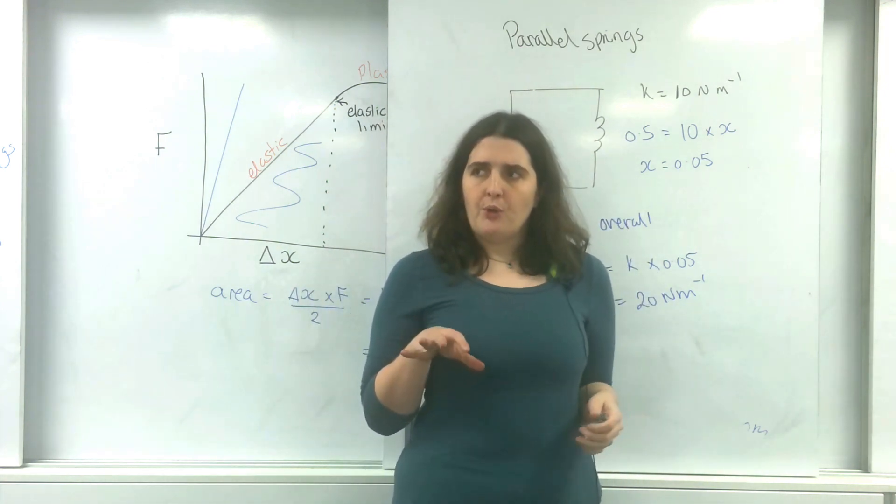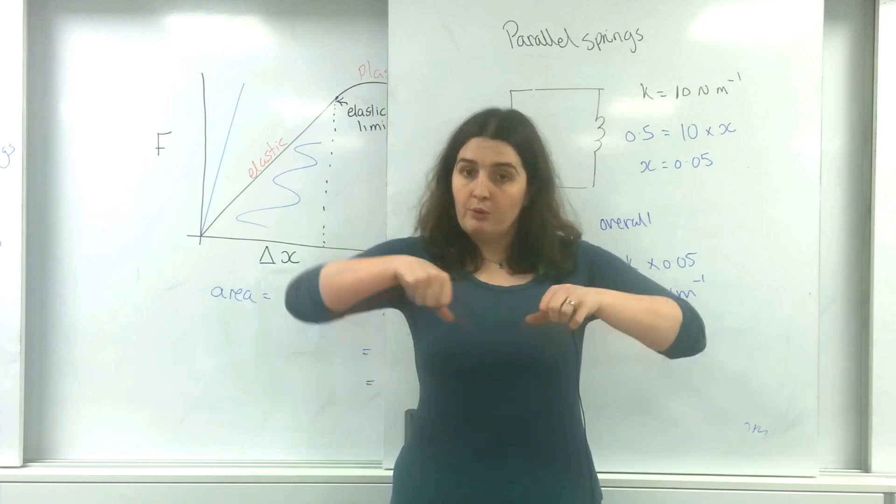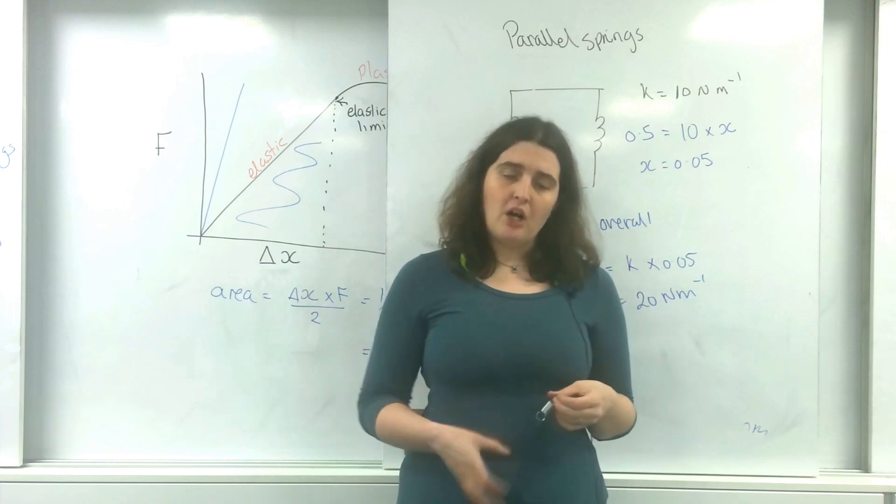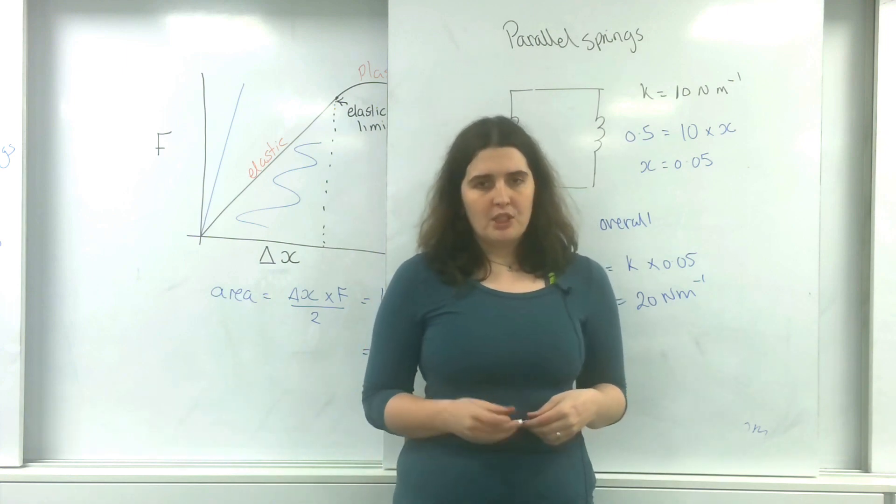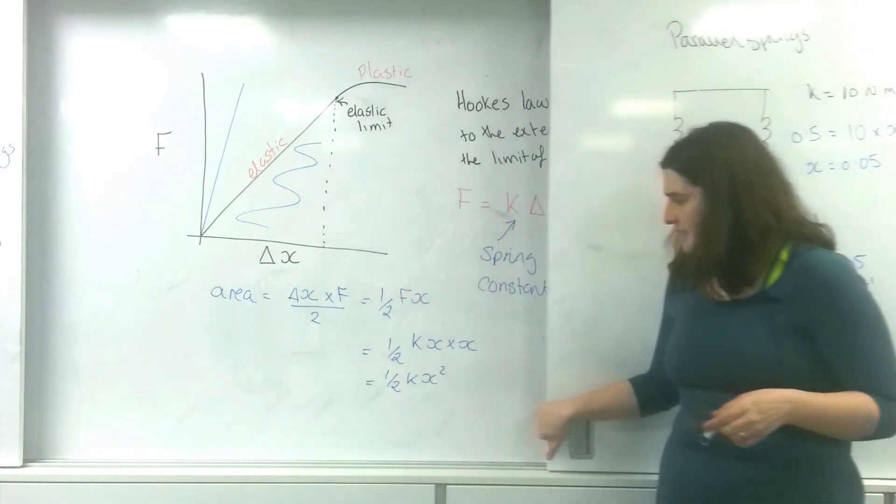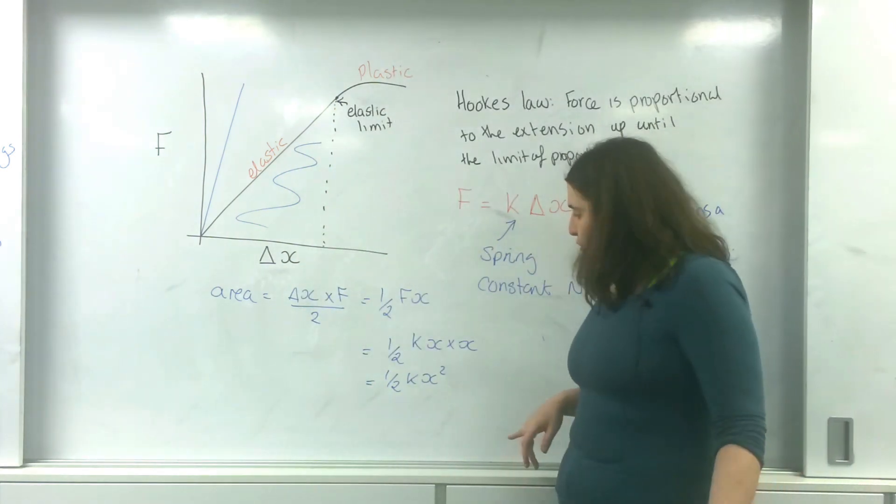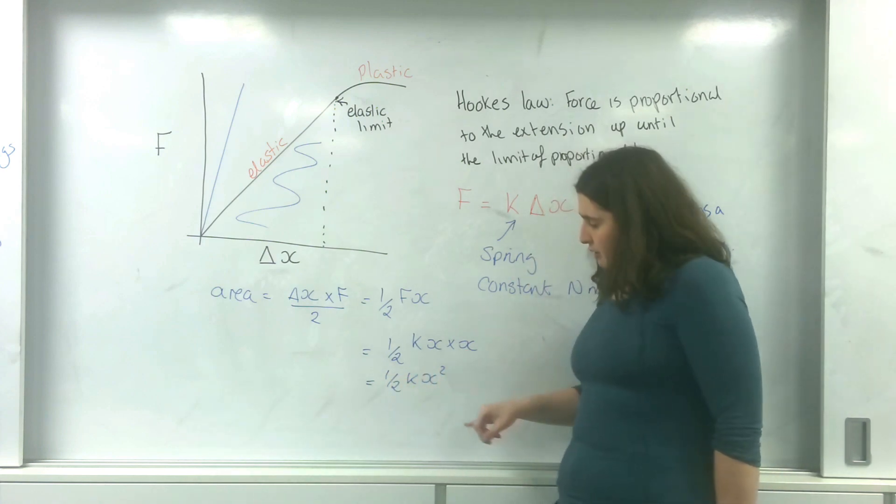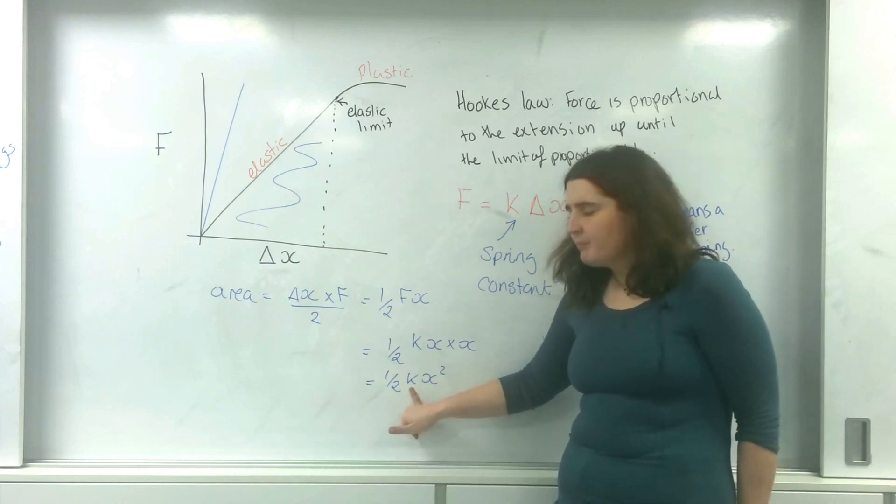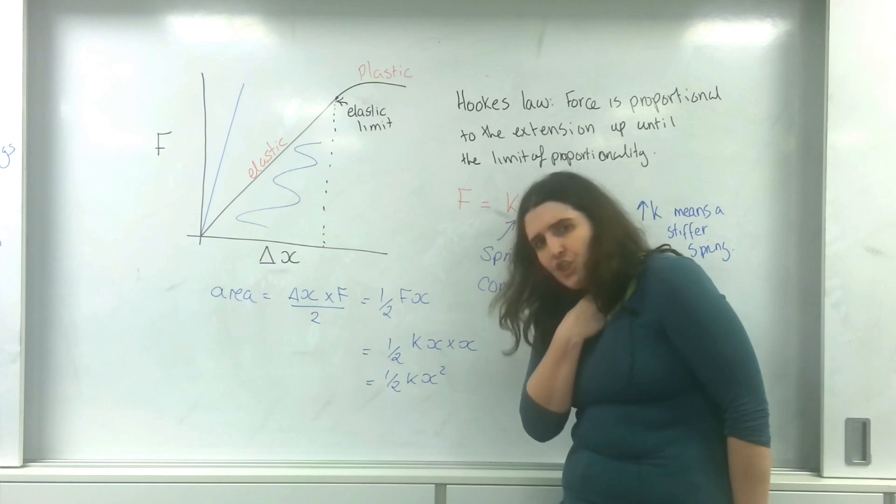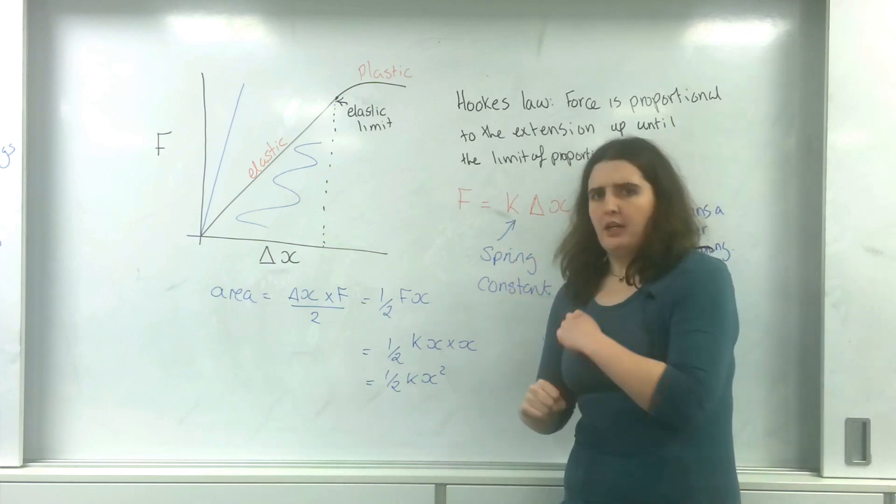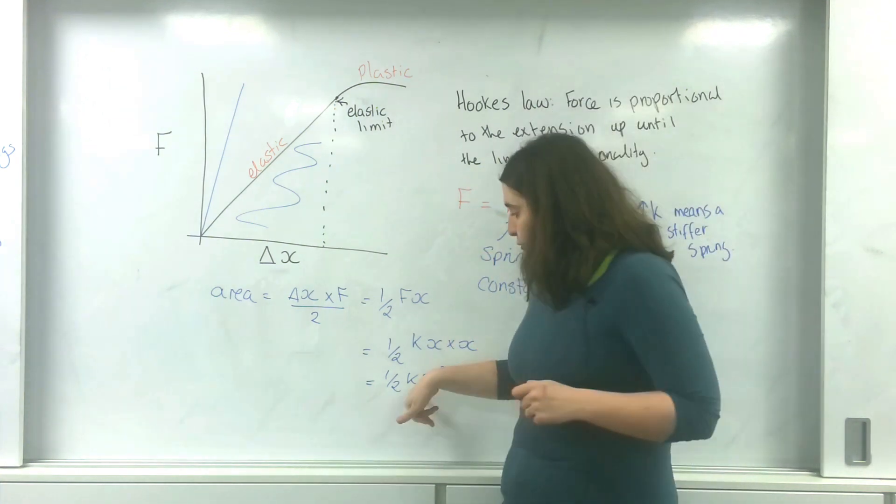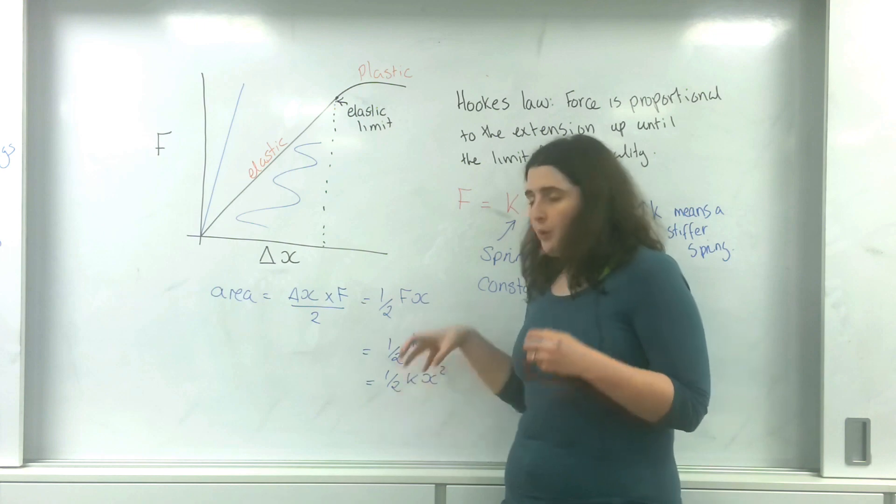And this is why when you're on bikes and suspension, you see two springs at the front in parallel, because this produces a far stiffer material. And going back to this idea of energy being stored, 0.5 kx squared, your suspension, because k overall is bigger, can absorb much more energy into the system when you're jumping off your kerbs. So suspension systems tend to be these parallel systems to increase the spring constant so it absorbs more energy. And that is series and parallel springs.